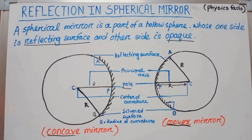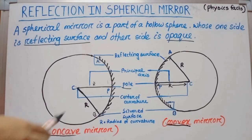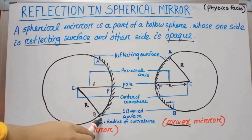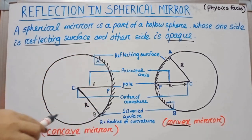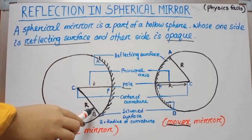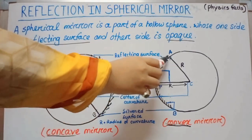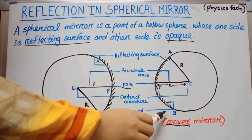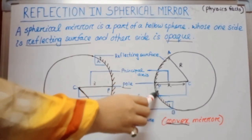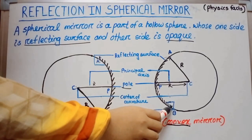A spherical mirror is a part of a hollow sphere whose one side is a reflecting surface and the other side is opaque — that means the other side is silver polished. The spherical mirror is of two types: one is concave mirror, another one is convex mirror. In case of a concave mirror, the outer bulb surface is the silver polished surface whereas the inner hollow surface is where reflection takes place. In case of a convex mirror, the outer bulb surface is where reflection takes place whereas the inner hollow surface is silver polished.